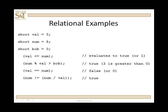How about num not equal to num divided by val? I'm going to bet that that's not true. Num is 8, val is 5. How many times does 5 go into 8? One time. So, this is 1. Num is 8. Are they not equal? So, that evaluates to true.